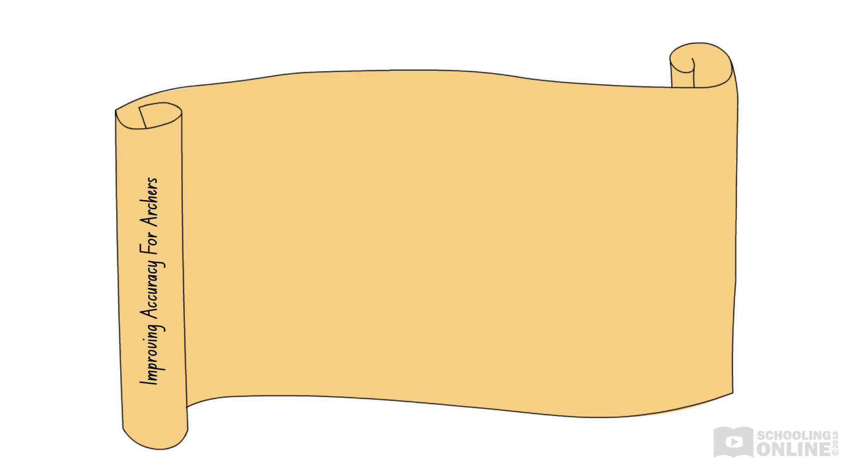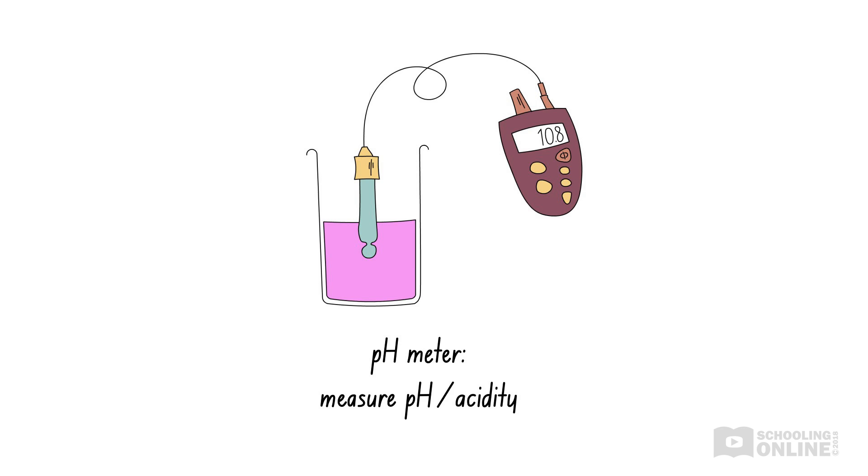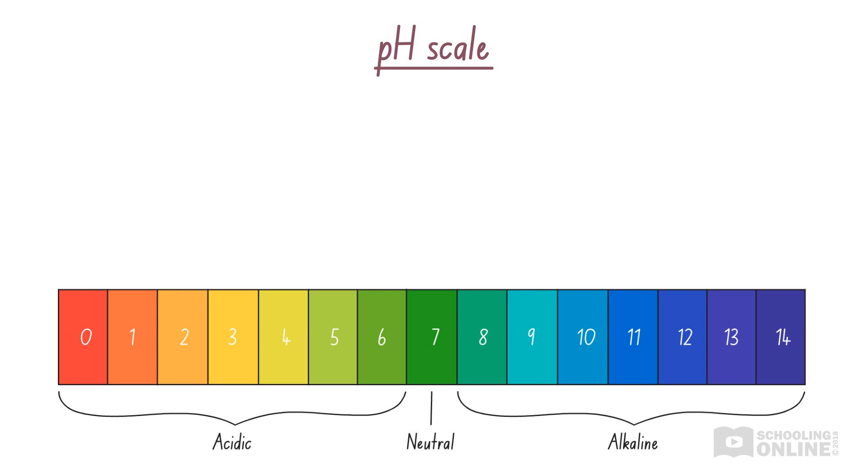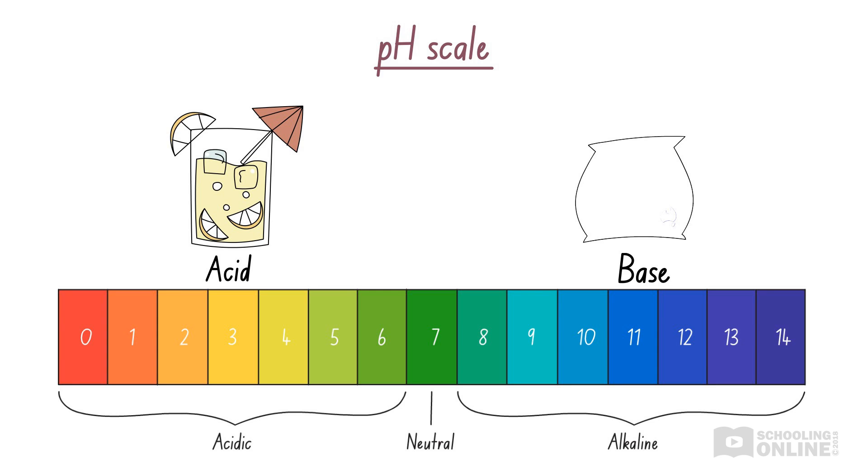This is known as calibration, which is a process where we readjust our measuring instruments against standards or accurate known values to ensure that they are measuring results accurately. When conducting experiments for the HSC biology course, you may need to know how to calibrate a pH meter, which is used to measure the pH of solutions. If you recall from Year 10 Science, the pH scale ranges from 0 to 14. Acids, such as lemon juice, have pH values less than 7. Bases, such as bicarb soda, have pH values greater than 7. Pure water is neutral and has a pH of 7.